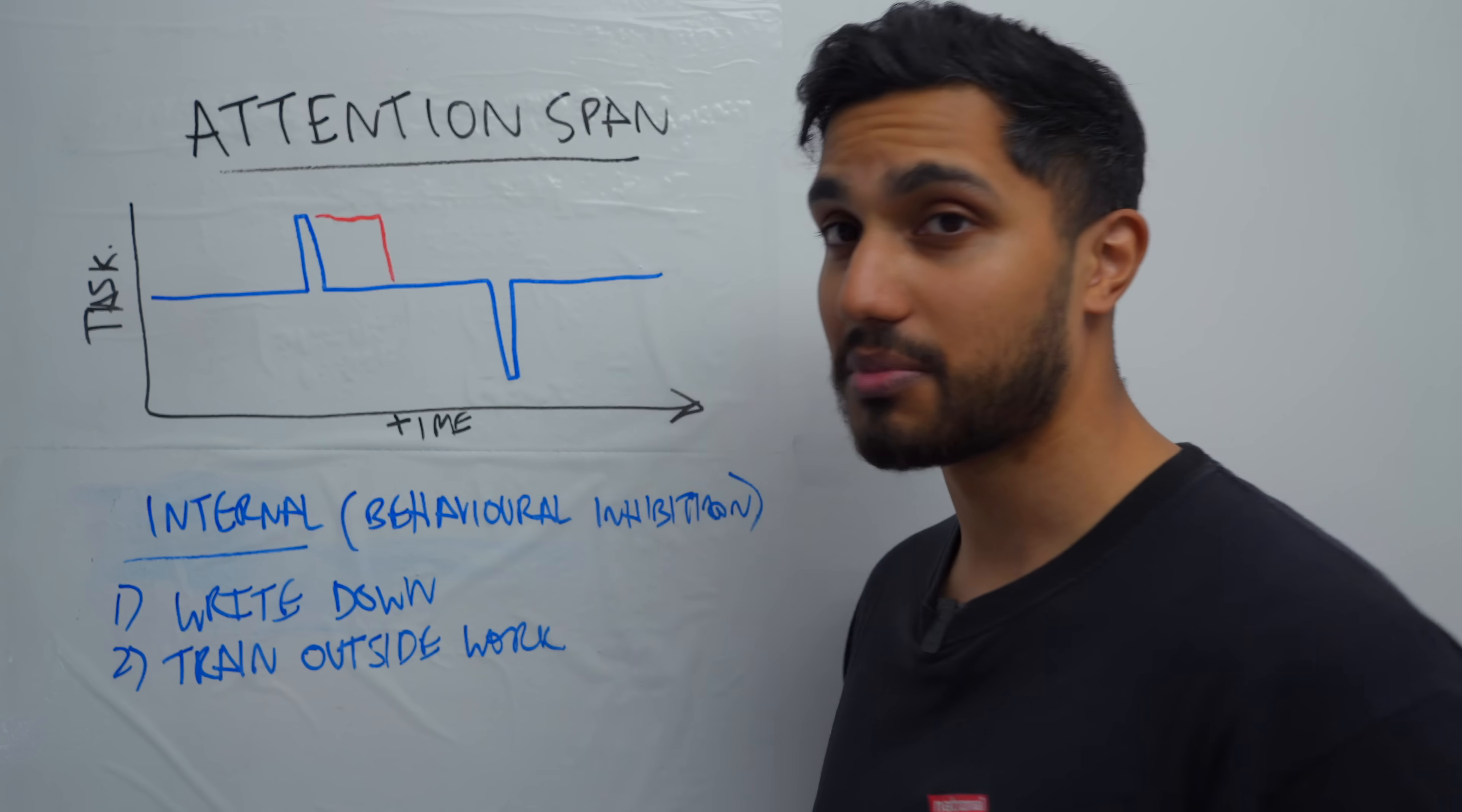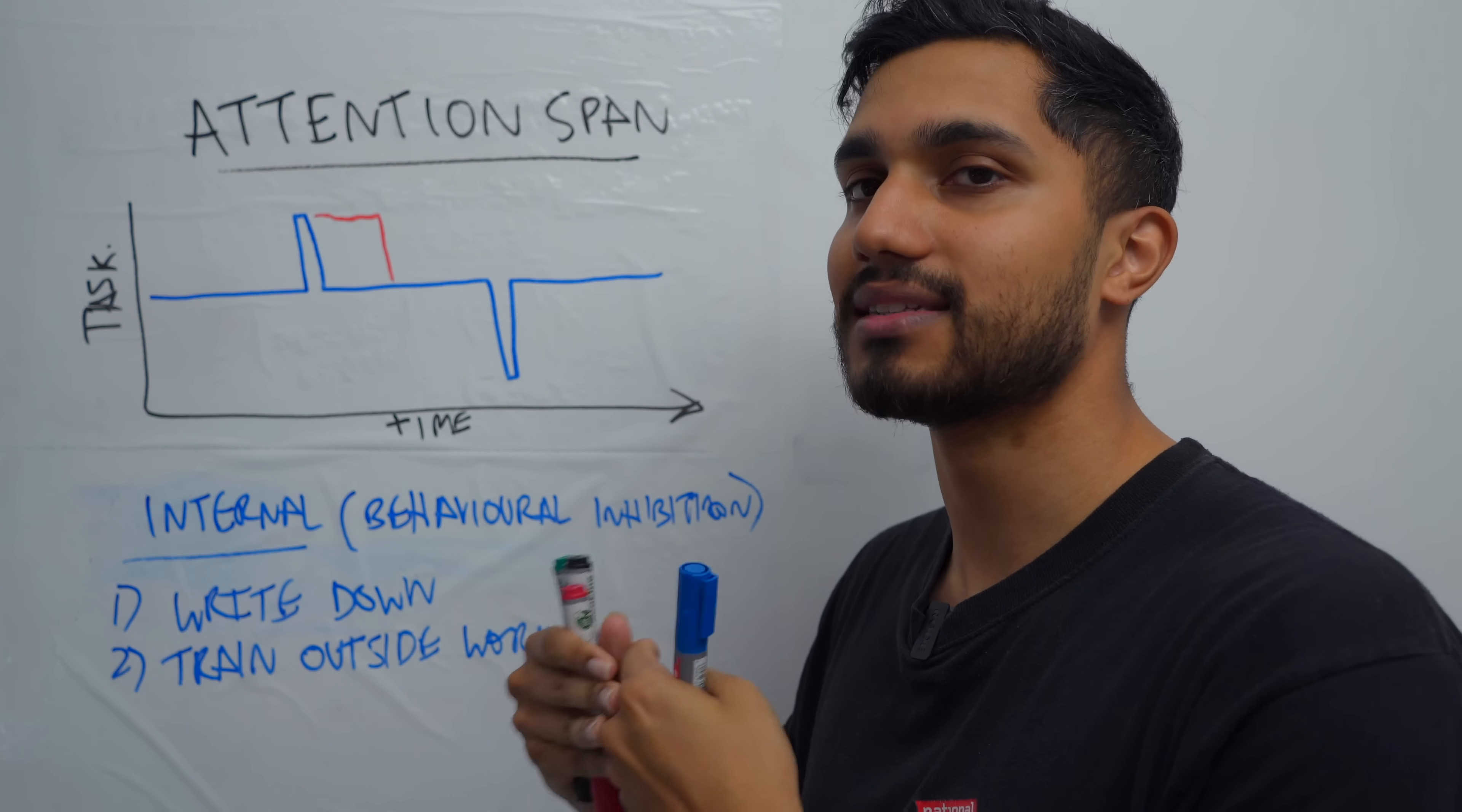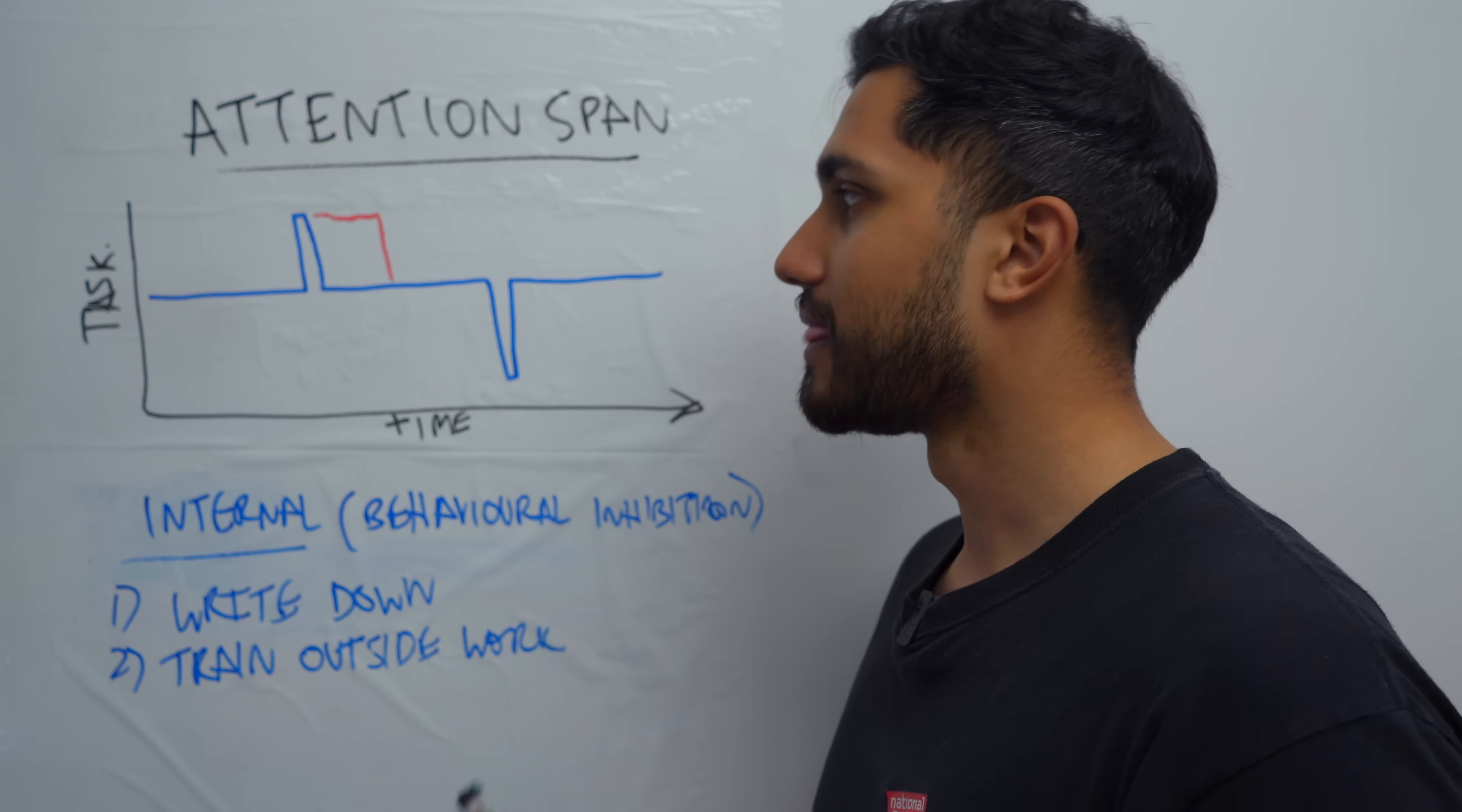And then the second thing that you can do to maximize your behavioral inhibition is to train outside of your work time. Behavioral inhibition is like a muscle. It's like the more you use it outside of your work, the easier it gets to stop yourself from doing the instinctive things that you wanted to do when you're actually doing your work. So do hard things.